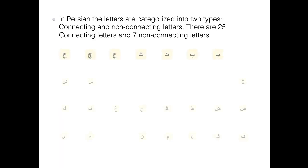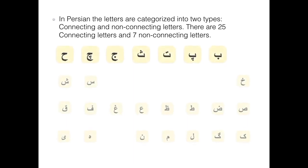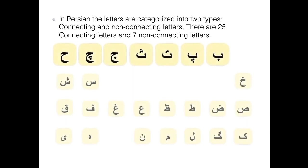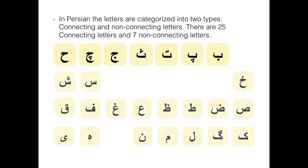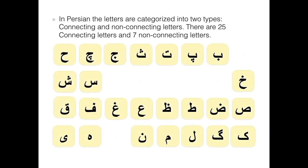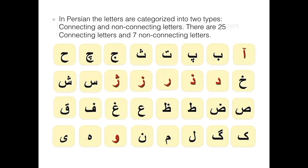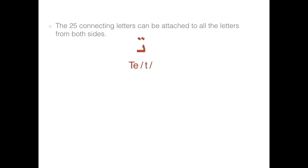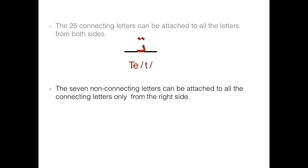In Persian, the letters are categorized into two types: connecting and non-connecting letters. There are 25 connecting letters and 7 non-connecting letters. The 25 connecting letters can be attached to all the letters from both sides. The 7 non-connecting letters can be attached to all the connecting letters only from the right side.